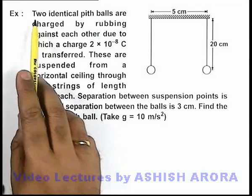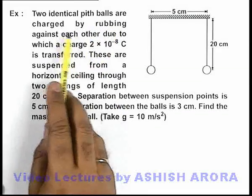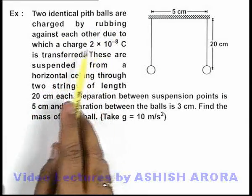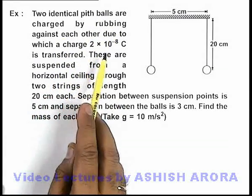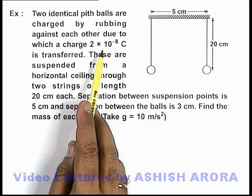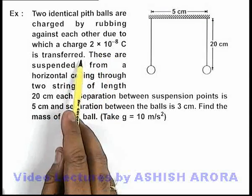In this example, two identical pith balls are charged by rubbing against each other, due to which a charge of 2×10⁻⁸ coulomb is transferred.